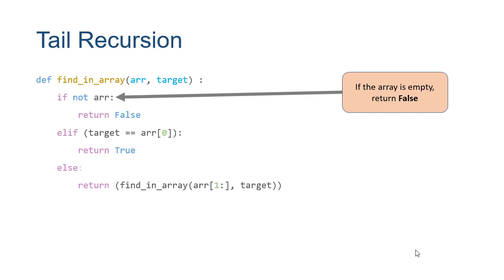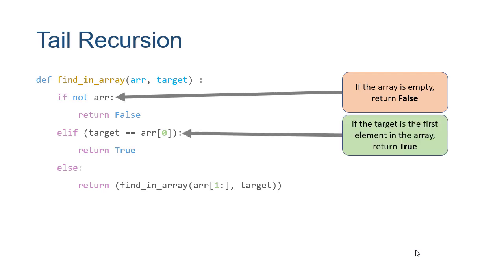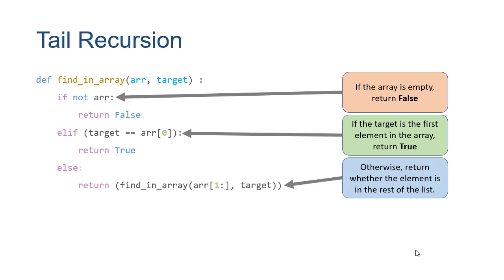The first thing we check is if the array is empty — we return false because the target can't be in an empty array. If the first element is the target, we return true. Finally, if the array is not empty and the target isn't the first element, we look in the rest of the array for the target. This Python syntax gives us the array from element one to the end.